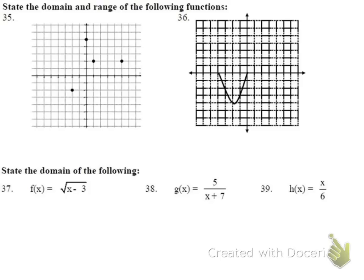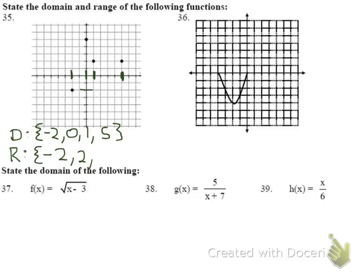Now for domain and range. For number 35, the domain consists of all x values in the set of points: {−2, 0, 1, 5}. The range consists of the unique y values: {−2, 2, 5}. Even though two points share the same y value, we only list each unique y value once.